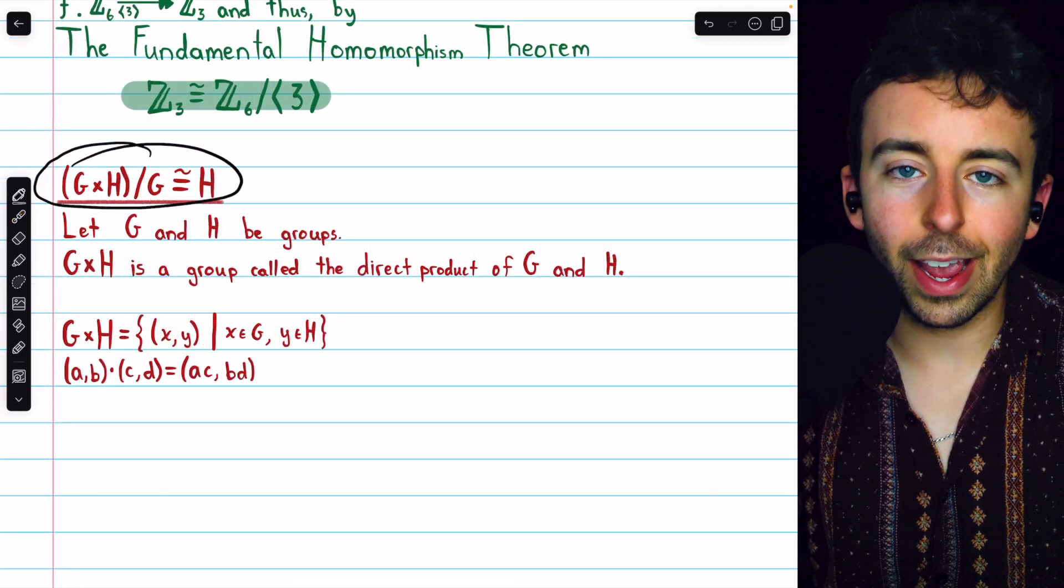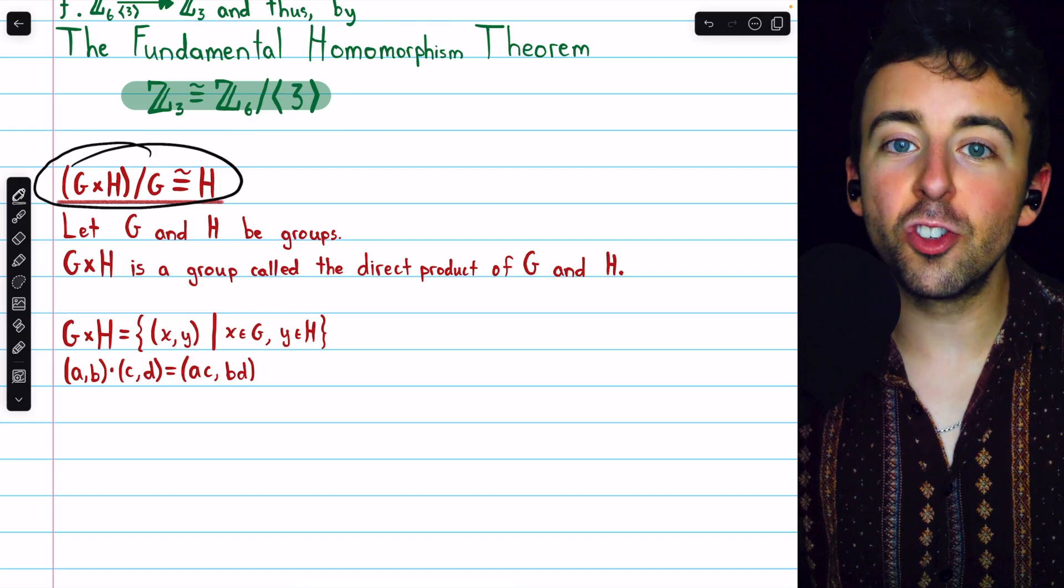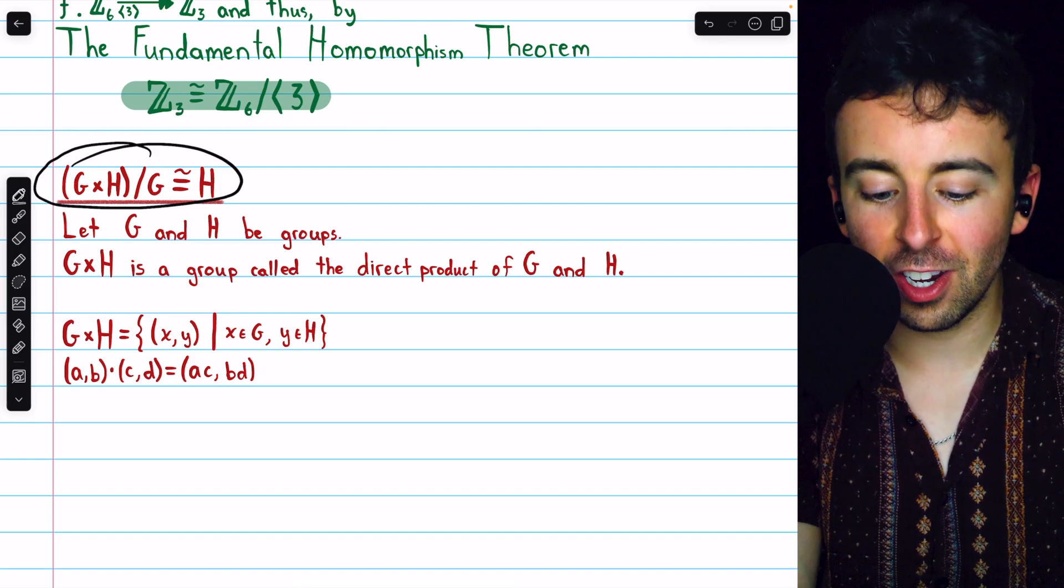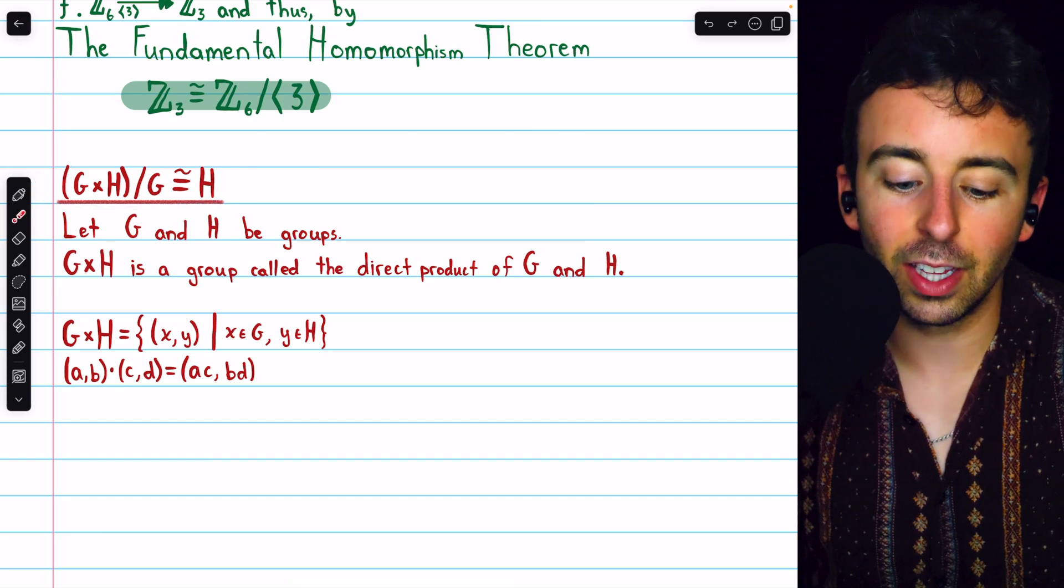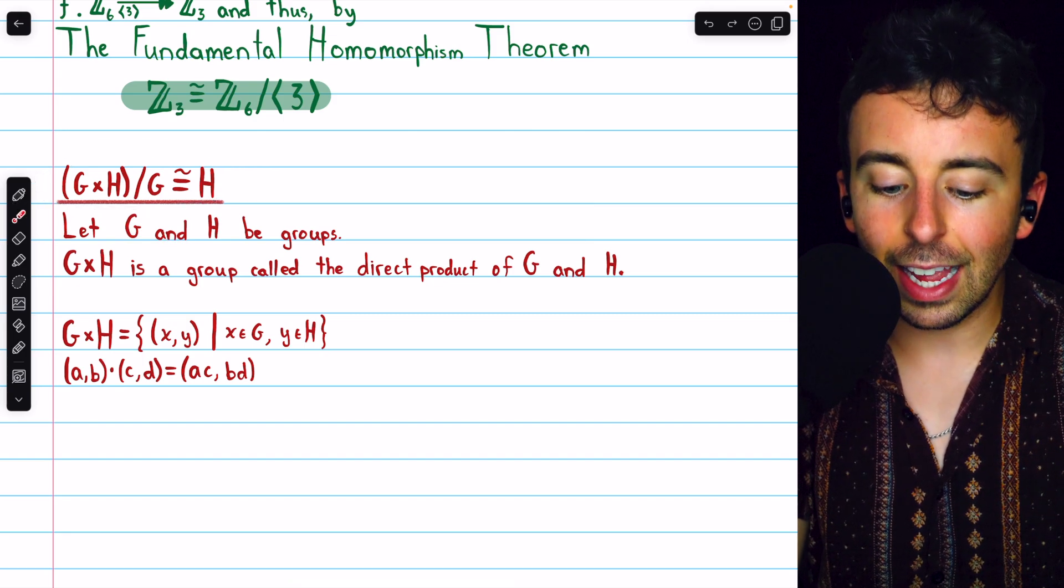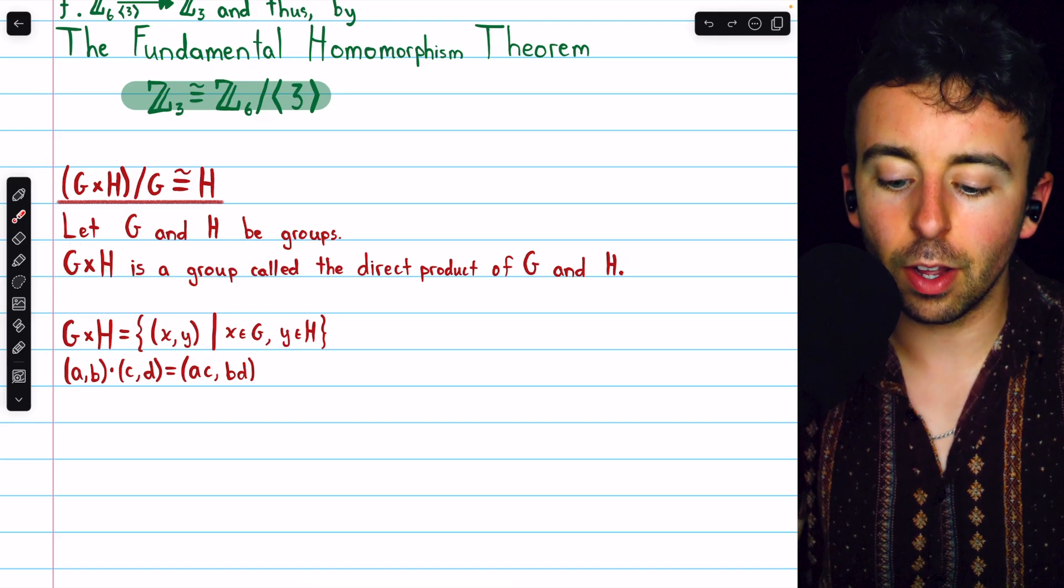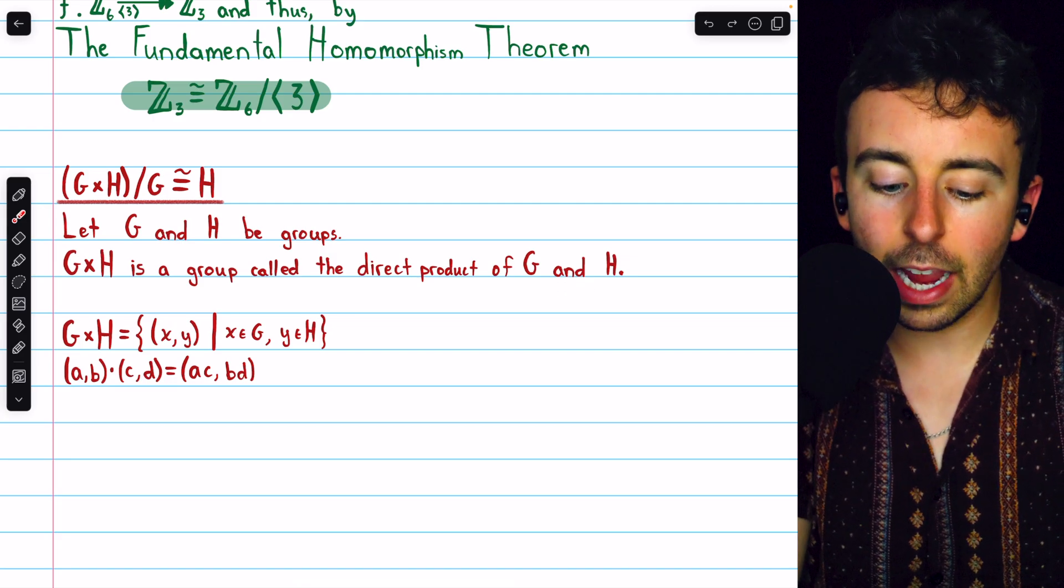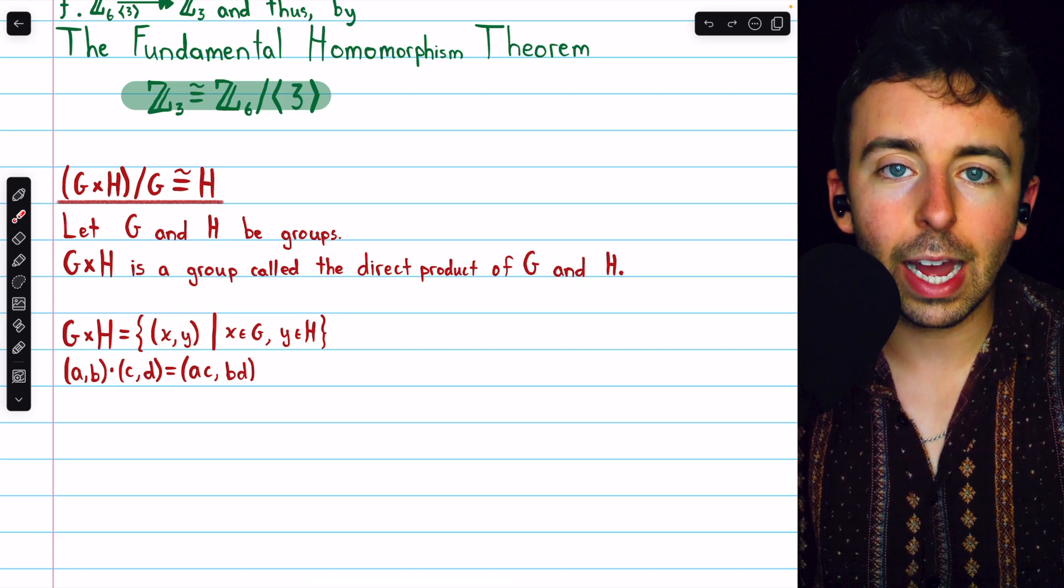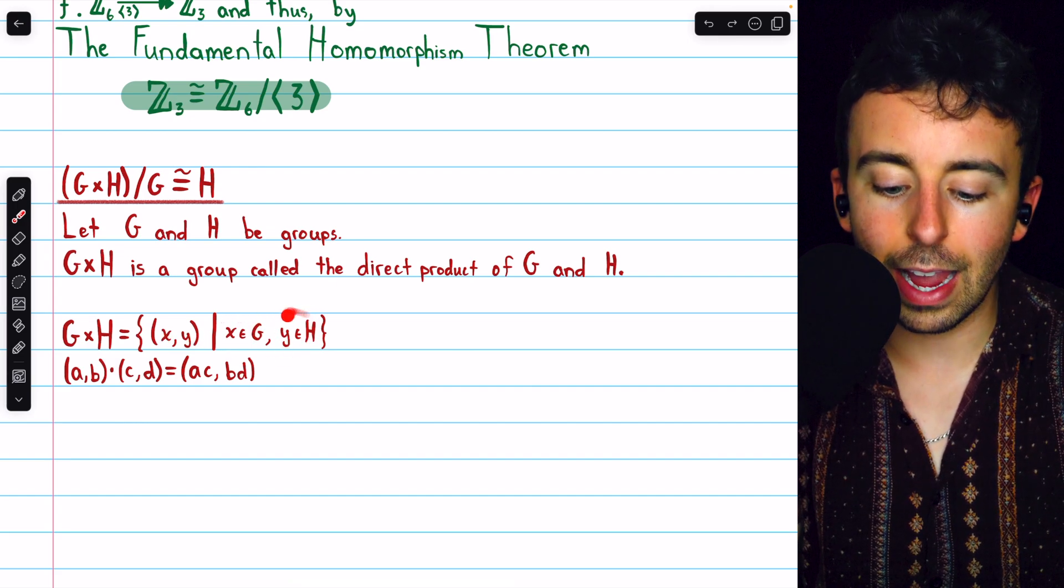This is an abusive notation, but in this example, we're roughly going to show that G times H divided by G is equal to H. Kind of a cute result. Let's go through the details so you know exactly what I mean. Let G and H be groups. You may recall that this is a group called the direct product of G and H. It contains all ordered pairs XY,